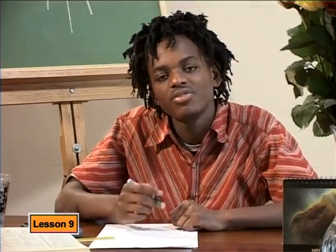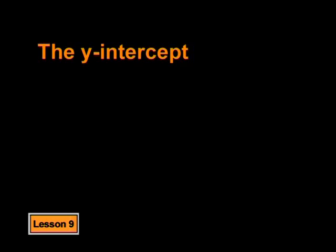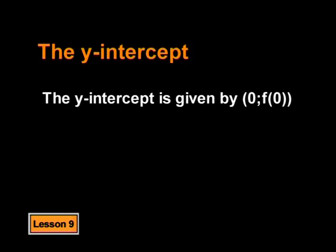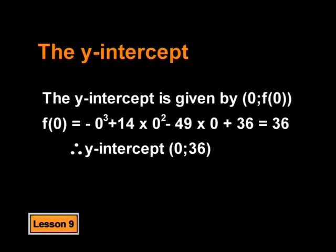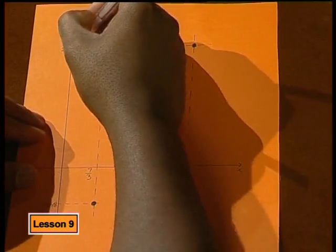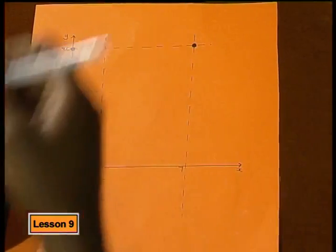So what is next? Well, all that is left are the intercepts with the axes, and I'd like to suggest we do the y-intercept first. We know that we can find the y-intercept by letting x equal 0. In other words, the y-intercept is at the point (0, f of 0). f of 0 equals negative 0 cubed plus 14 times 0 squared minus 49 times 0 plus 36, which equals 36. So the y-intercept is at the coordinates (0, 36). Let me add that to the sketch.